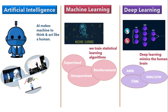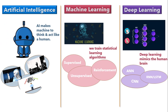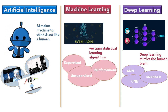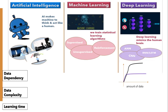Those are the basic differences between artificial intelligence, machine learning, and deep learning. Now let's understand how they differ in terms of data dependency, data complexity, and learning time. If you look at the graph on the screen, the x-axis shows the amount of data and the y-axis shows performance.